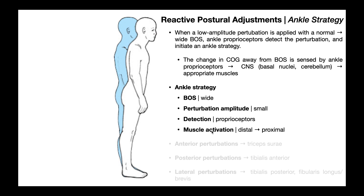The order of muscle activation is going to be distal to proximal, meaning that muscles controlling the talocrural and subtalar joints are going to activate first — so the gastrocnemius and soleus, tibialis anterior, tibialis posterior, and the lateral fibularis muscles.